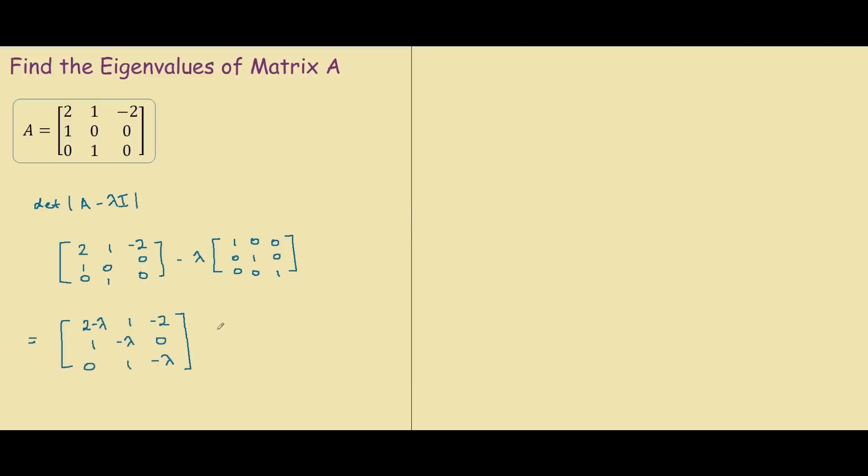So now our next step is to find the determinant of this 3x3 matrix. If you guys remember how to find the determinant, we look at this term here, 2 minus lambda. And then we ignore the rows and columns for this term and look at these four. So negative lambda times negative lambda minus 0 times 1. So that's how you find the term of a 2x2 matrix if we focus on this section over here.